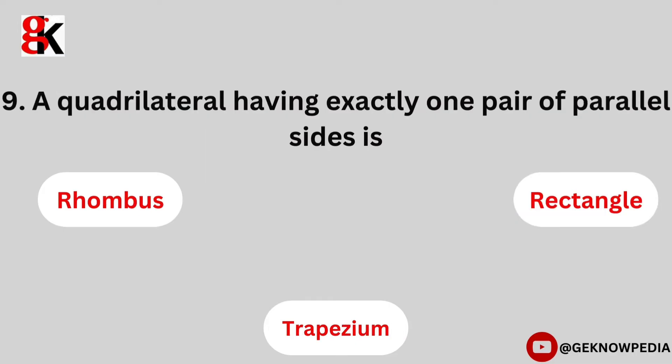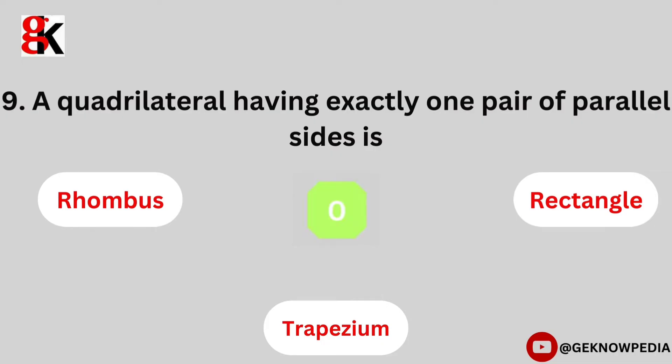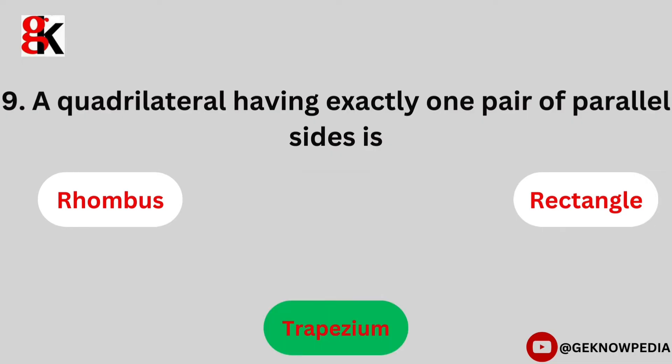Ninth question. A quadrilateral having exactly one pair of parallel sides is: rhombus, rectangle, trapezium. The correct answer is trapezium.